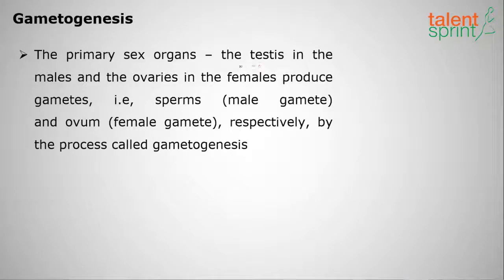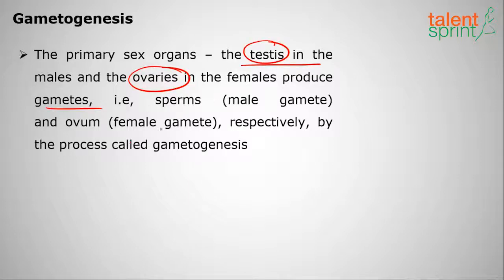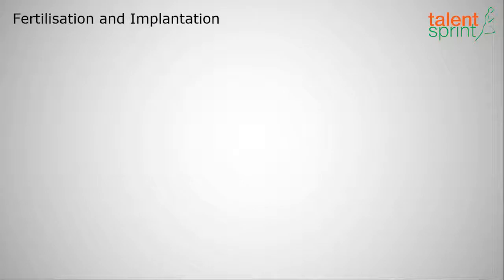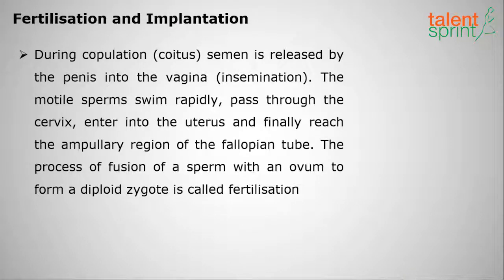The primary sex organs — testes in males and ovaries in females — produce gametes: sperm (male gamete) and ovum (female gamete) respectively. This process of gamete production is called gametogenesis. During copulation, semen is released by the penis into the vagina — this is called insemination.